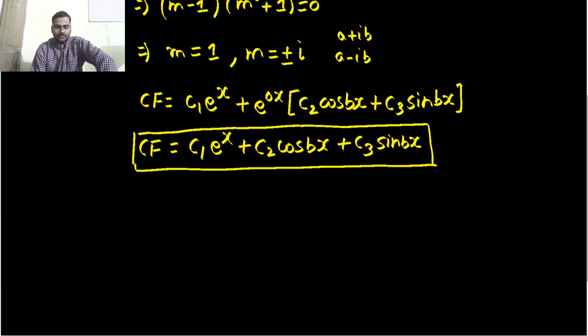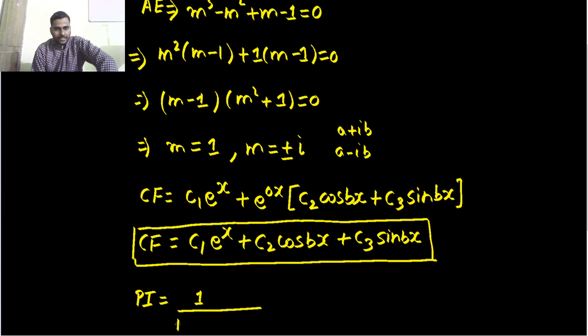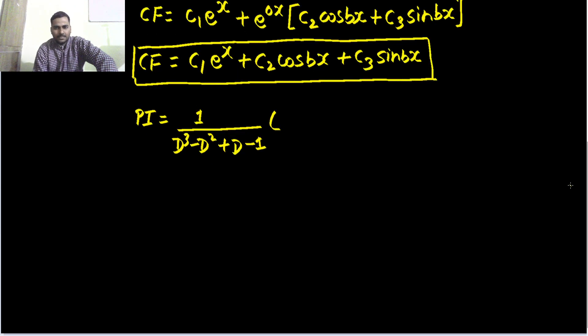Let's move to the particular integral and that will be 1/(f(D)) which is D³ - D² + D - 1 operating on 4 sin x. 4 I can take out in the next step. Now sine x or cos bx whenever you have, you replace D² by -(a²). a here is 1 so you will replace D² by -1.